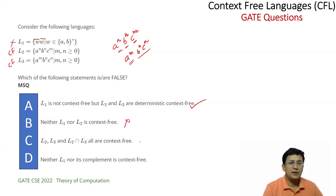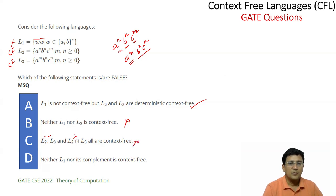The third statement is that L2, L3, and L2 intersection L3 — the context-free languages are not closed under intersection. So L2 and L3 are context-free, but this intersection is not context-free. This statement is false. The next statement is that neither L1 nor its complement is context-free. L1 is not context-free, but it is not context-free either. So this statement is also false.